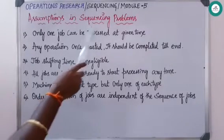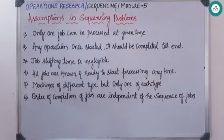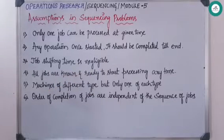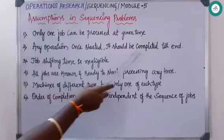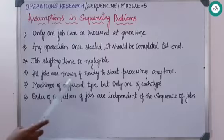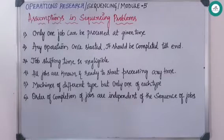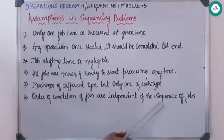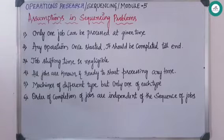In order to solve a sequencing problem, you should know these assumptions. First, only one job can be processed at a given time. Second, any operation on a machine, once started, should be completed till the end. Third, job shifting time is negligible. Fourth, all jobs are known and ready to start processing at any time. Fifth, machines are of different types but only one of each type. Sixth, the order of completion of jobs is independent of the sequence of jobs.